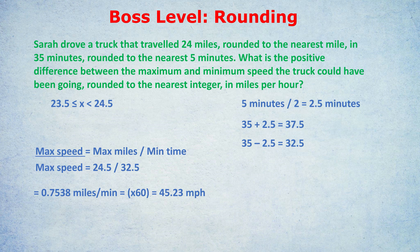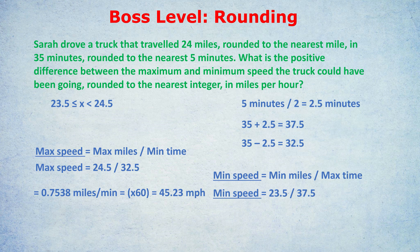To calculate the minimum speed: the minimum speed uses the least amount of miles divided by the maximum amount of time. Min miles divided by max time. The min miles was 23.5 and the max time was 37.5. Again, once we have that figure, we multiply by 60 to convert into miles per hour.